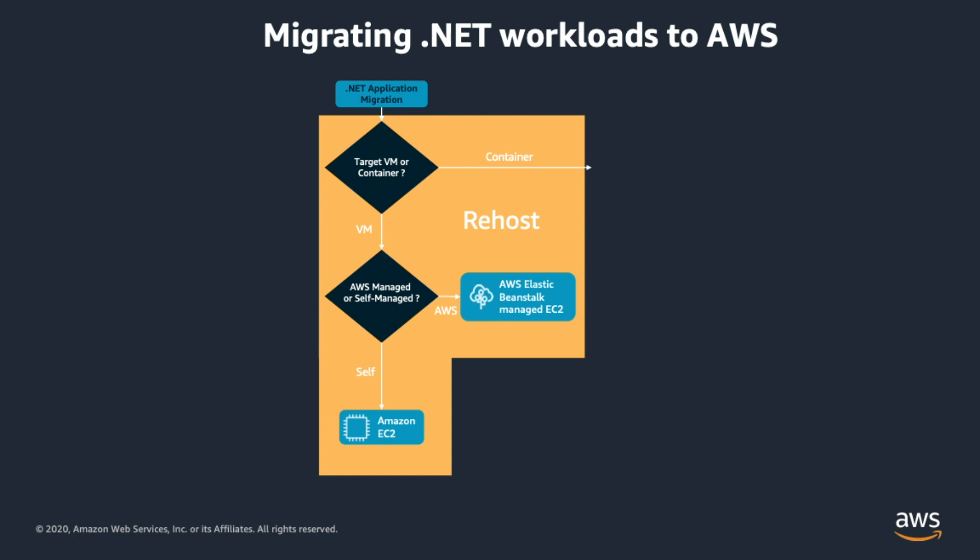Now let's move on to the decision tree to help migrate your .NET application to AWS. The first option is rehost — a fairly simple choice. We have two options: Amazon EC2 and AWS Elastic Beanstalk. If the migration target is going to be a VM, we decide between AWS-managed or self-managed. The self-managed Amazon EC2 option gives you more control over the environment, which leads to higher operational overhead. AWS Elastic Beanstalk fits well when you don't require full control, allowing you to focus on the application and simply deploy updates when needed.